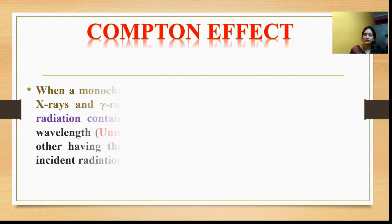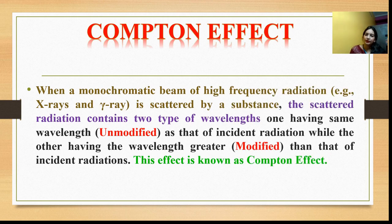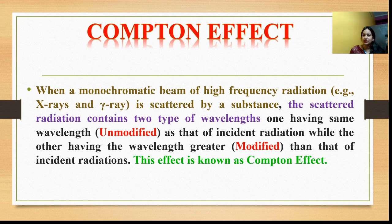Let's read the formal definition: When a monochromatic beam of high-frequency radiation is scattered by a substance, the scattered radiation contains two types of wavelengths — one having the same wavelength as the incident radiation, while the other has a wavelength greater than that of the incident radiation. This effect is known as the Compton Effect.